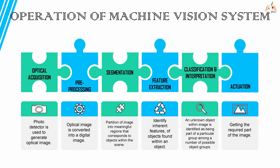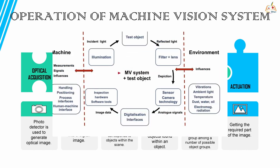The fourth step is feature extraction, which identifies inherent features of objects found within an image. The fifth step is classification and interpretation, where an unknown object within an image is identified as being part of a particular group among a number of possible object groups. The final step is actuation — getting the required output from the image.